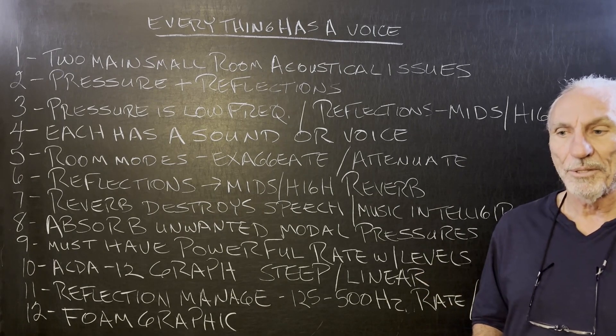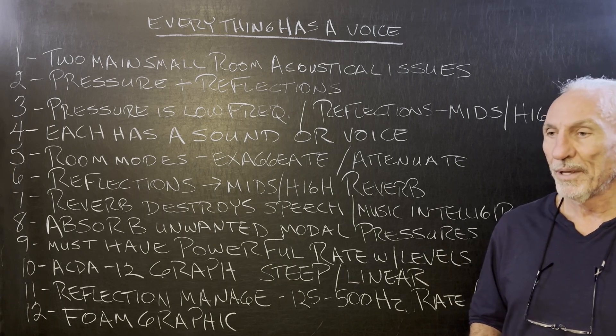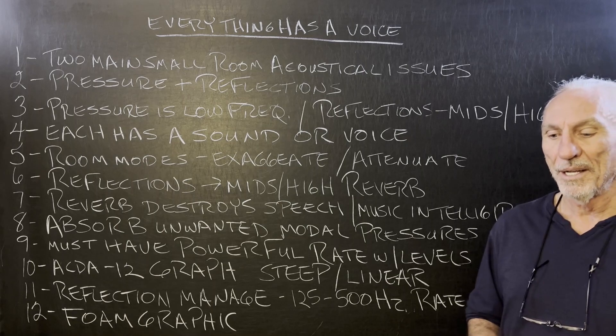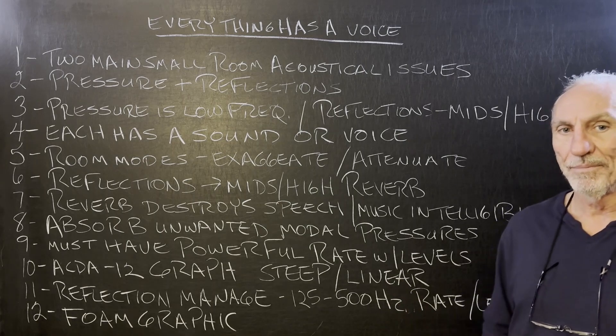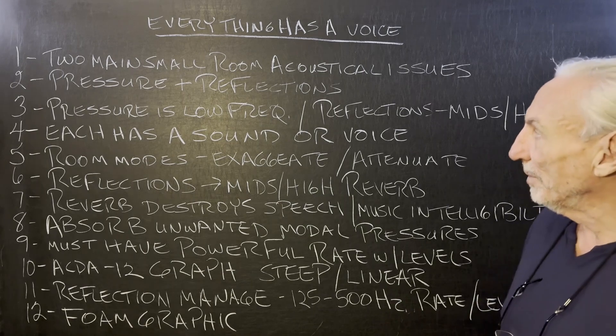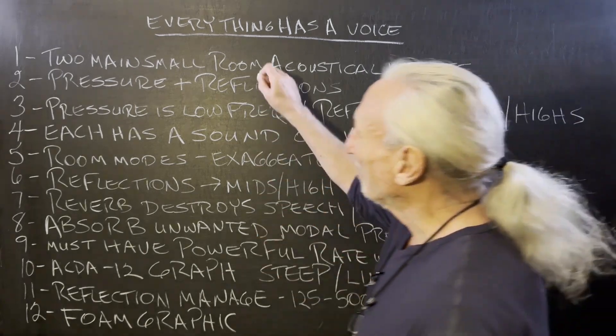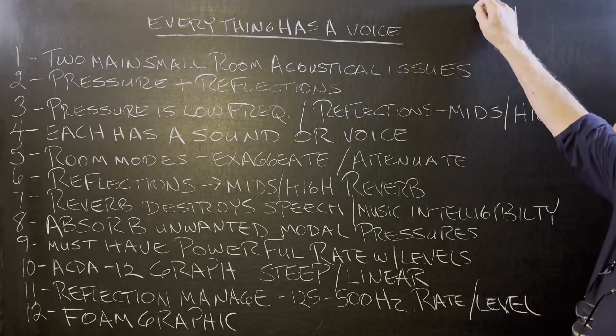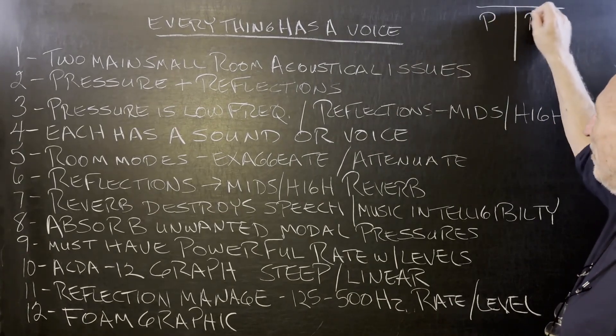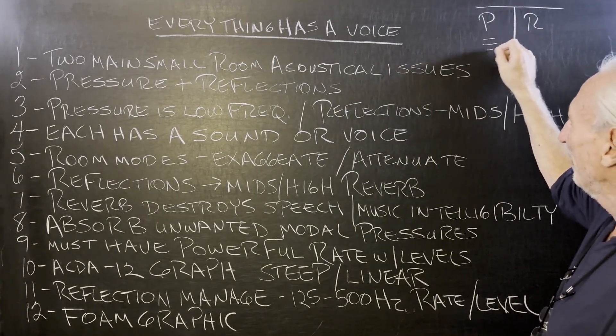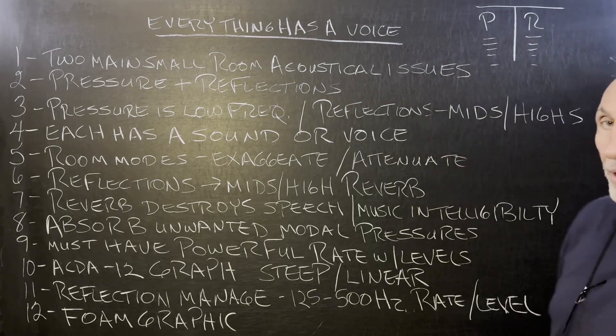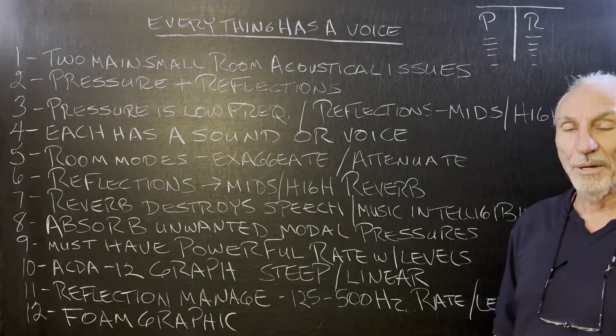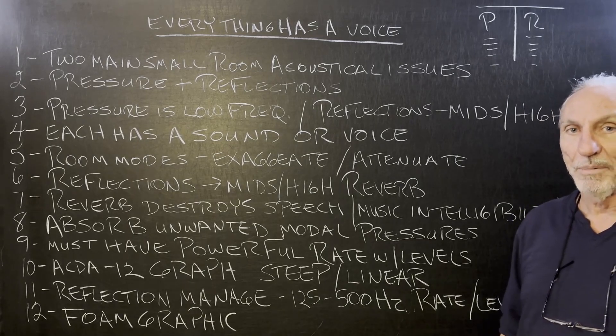People are still having a difficult time understanding small room acoustics. So once again, I'm going to try to break it down into two main categories and then assign some audibility to those. Small room acoustics, we have two main issues. If we just draw an outline, we're going to have pressure and reflections. Everything else can fall in those categories. So if we use this kind of dual paradigm, we'll be able to get a better understanding.